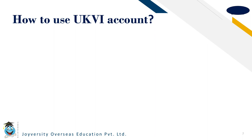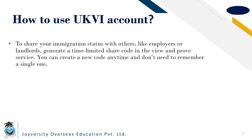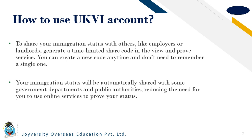To share your immigration status with others like employers or landlords, generate a time-limited share code in the view and proof service. You can create a new code anytime and don't need to remember a single one. Your immigration status will be automatically shared with some government departments and public authorities, reducing the need for you to use online services to prove your status.